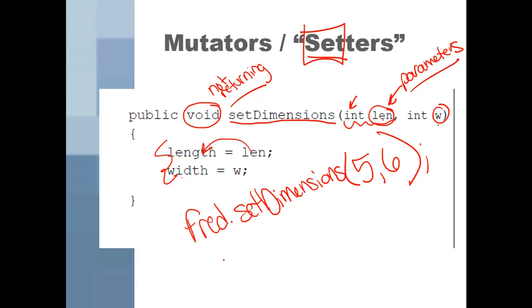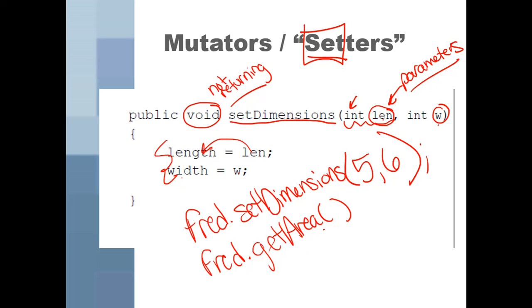Then if I say Fred.getArea(), he'd return 30 because I'm now accessing the new length and width that I just changed.